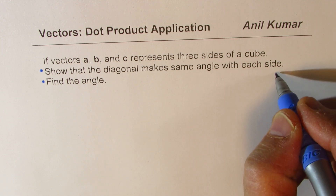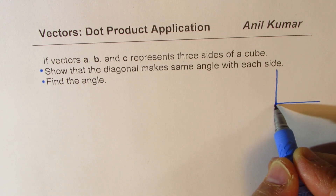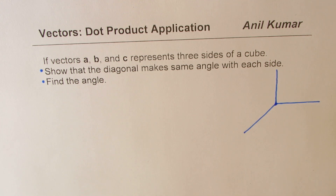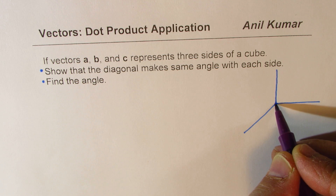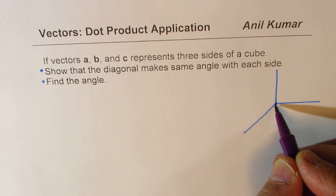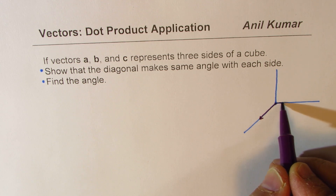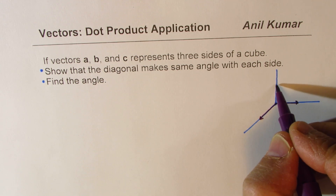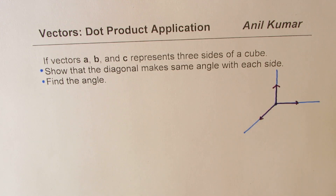Let us first understand the situation. I'll sketch a cube here with a 3D coordinate plane as shown. When we say vectors a, b, c represent three sides of the cube, let's place the vertex of the cube on the origin O. Let this be vector a, this be b, and that be c. So these are the three sides of the cube.